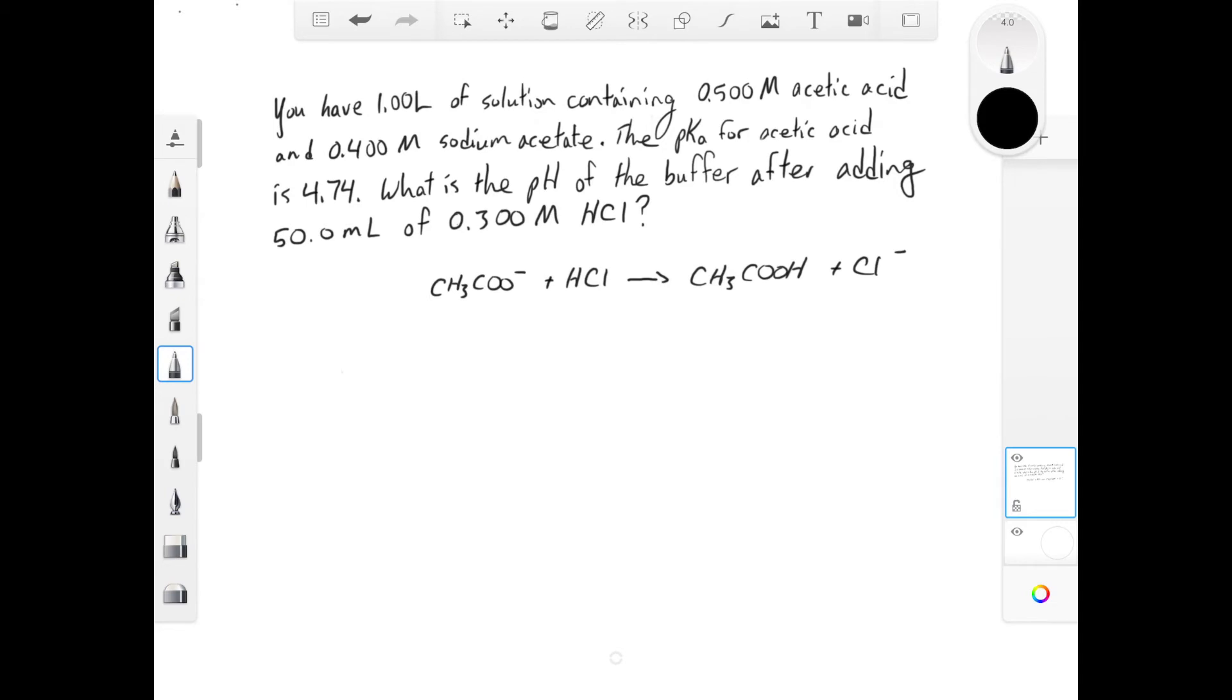Initially, we start with one liter of solution, and our sodium acetate is 0.4 molar, which means our acetate ion is 0.4 molar. If we have one liter of solution, that means we have 0.4 moles of acetate ion. If we look at our 50 mL of 0.3 molar HCl, that gives us 0.015 moles.